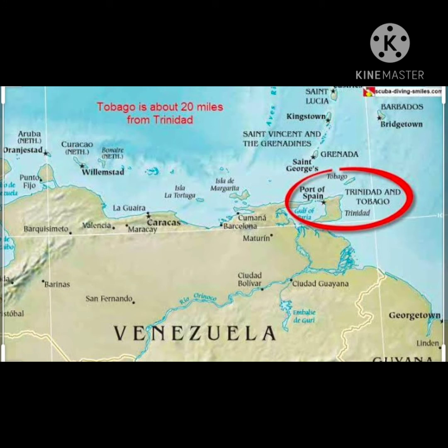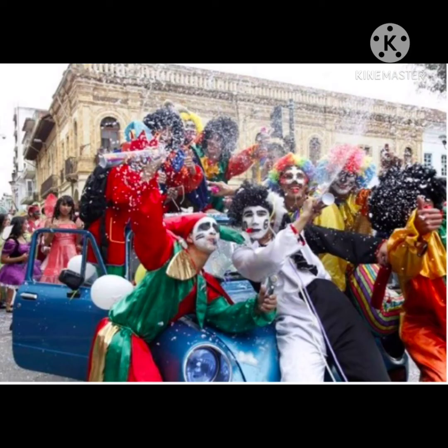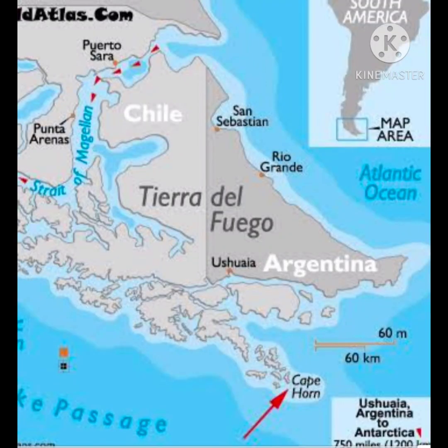Trinidad and Tobago — officially the Republic of Trinidad and Tobago — is bound close to the coast of Latin America. Its capital is Port of Spain. It is very famous for its carnivals, which is a cultural festival celebrated from February to the beginning of March, where people dress in different costumes, dance in the streets, and enjoy themselves.